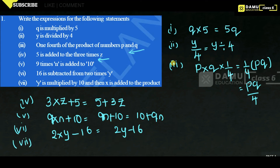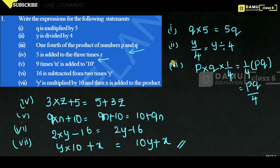The seventh statement: y is multiplied by 10 and then x is added to the product. Y multiplied by 10 gives 10y, and then x is added, resulting in 10y plus x. This is how we write statements as algebraic expressions.